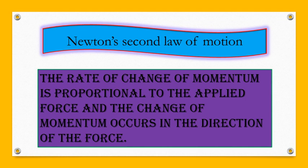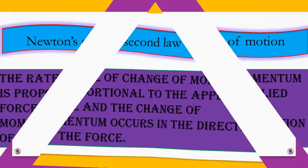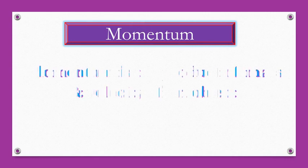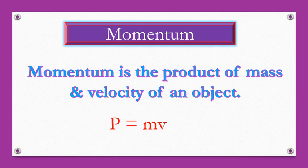Now, what is momentum? Whenever two objects are striking one another, the effect of that striking depends on both the mass of the object and its velocity. This means the effect of the force depends on a property related to both mass and velocity of the striking object. This property was termed as momentum by Newton. Momentum is the product of mass and velocity of an object, so the formula becomes P equals M into V.